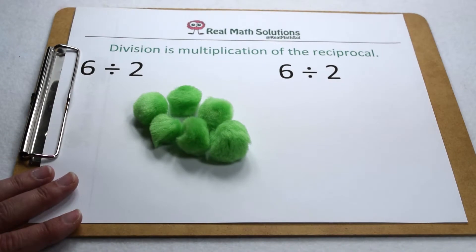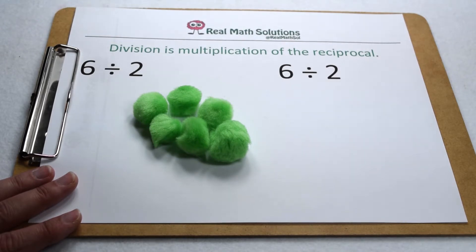Since we've evaluated our parentheses and exponents, the next part we need to focus on is multiplication and division. In order of operations, multiplication does not come before division. Instead, we work through them left to right.